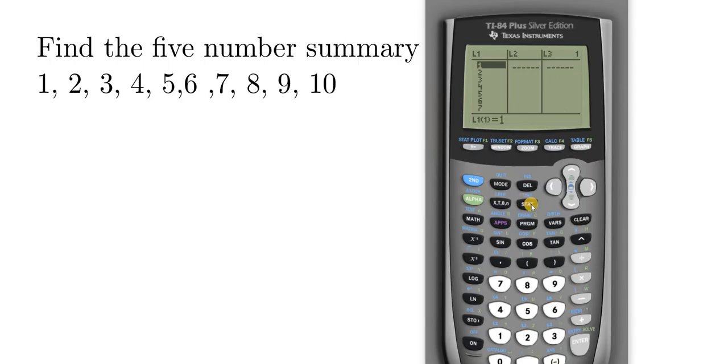Then, to get the five number summary, just hit STAT again. And you want to go over to where it says CALC. So to get there, you have to hit the right arrow key. So I'm going to press that right arrow key. And now we're in the CALC menu.